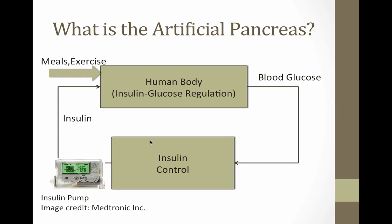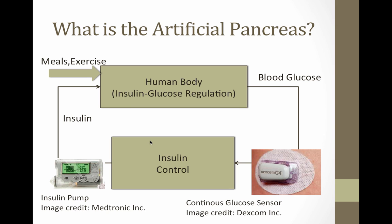When that happens, insulin needs to be administered externally through an insulin pump. This is an example of a pump that has a syringe with insulin in it, and it infuses insulin into the patient. On the other side, there's a continuous glucose sensor — a common brand is Dexcom. Together, there is an insulin control implemented outside the human body that compensates for the missing pancreas — and this is called the artificial pancreas.